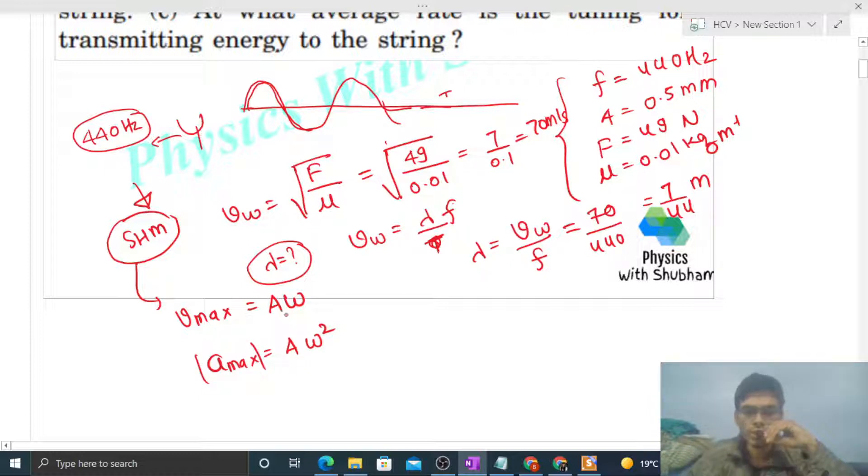We know the amplitude. Omega can be found as ω = 2πf = 2π × 440 = 880π rad/s. So maximum speed vₘₐₓ = Aω = 5 × 10⁻⁴ m × 880π m/s.